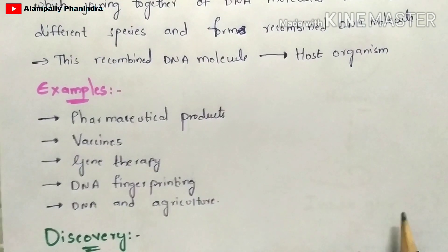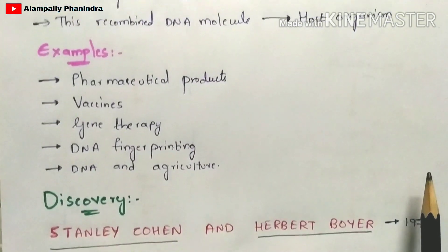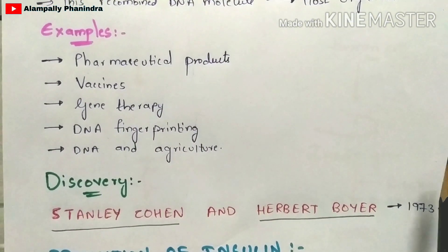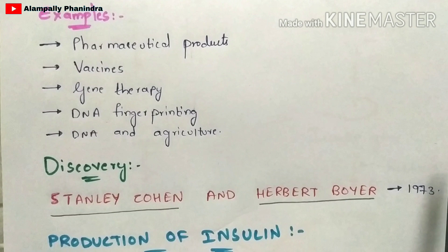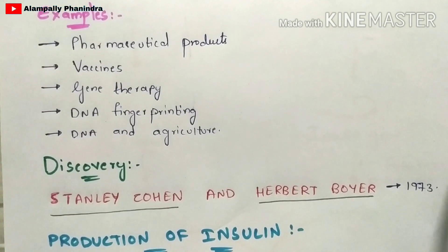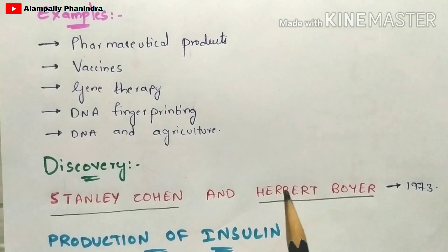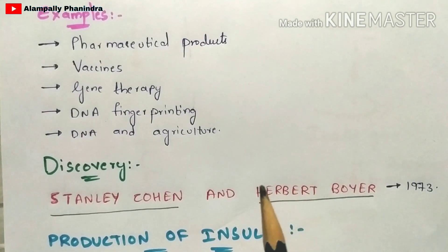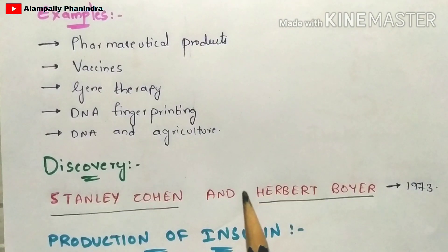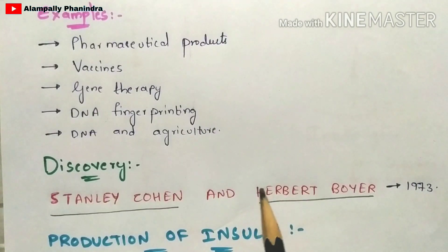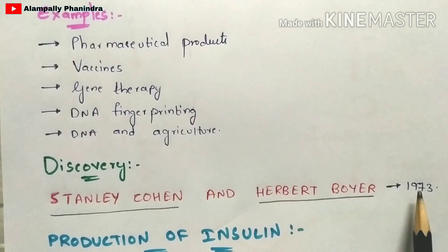Regarding the discovery of recombinant DNA technology, Stanley Cohen and Herbert Boyer are the scientists who discovered this technology in 1973.